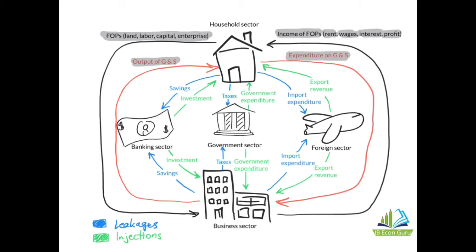However, because there are three other sectors involved, this leads to certain money leaking out and certain money being injected back into the circular flow. Households don't spend all of their income — some goes to the banking or financial sector in the form of savings, and businesses also save part of their profit. Households and businesses pay taxes to the government, and households sometimes spend their income on foreign goods and services, which is called import expenditure — money that leaks out to the foreign sector.